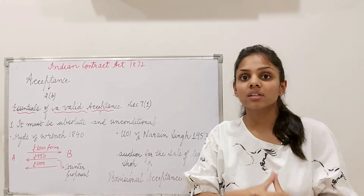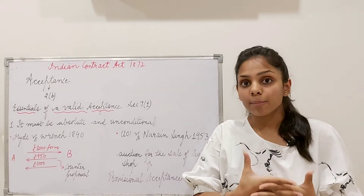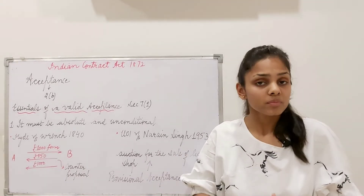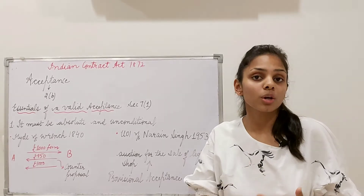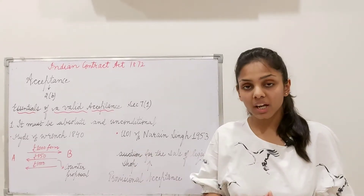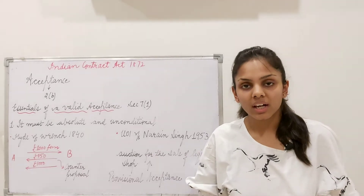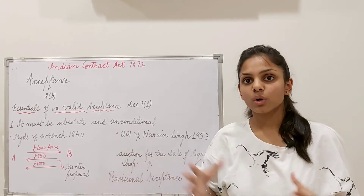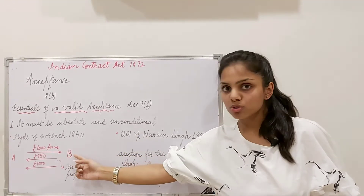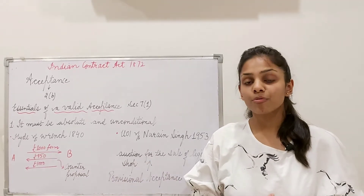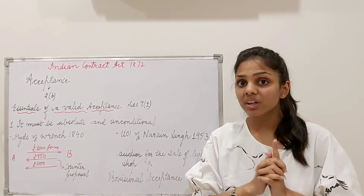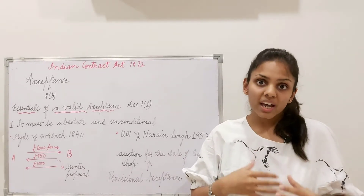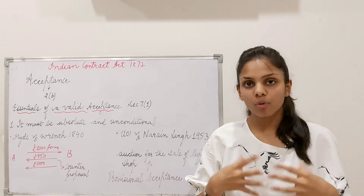It is not a valid acceptance. Why? Because it is not absolute, it is conditional, it is partial. So a new concept emerges here — A's original proposal has become dead. When B said 950 pounds, that was not a valid acceptance. Instead, it is a counter proposal. So the proposal here is a counter proposal. B has given a counter proposal to A.